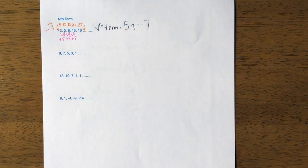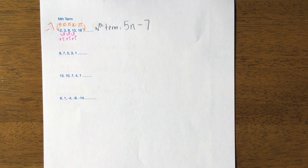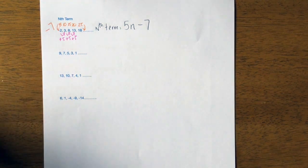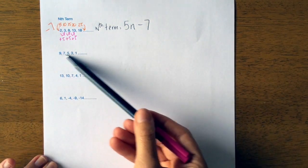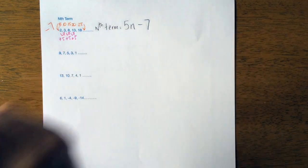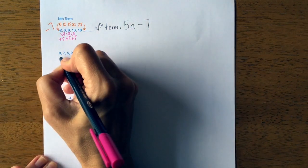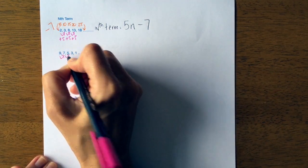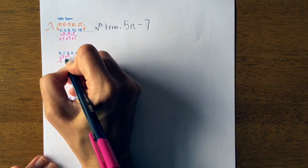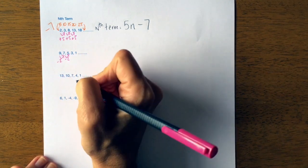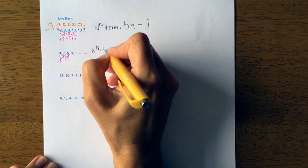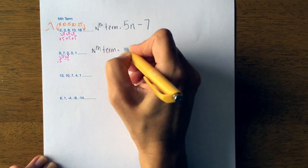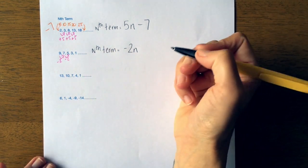The next one. First we need to work out the difference. This is now a decreasing sequence, so there's one difference to how you would do this. I can see that it is taken away 2 each time. So the nth term is now going to be negative 2n.